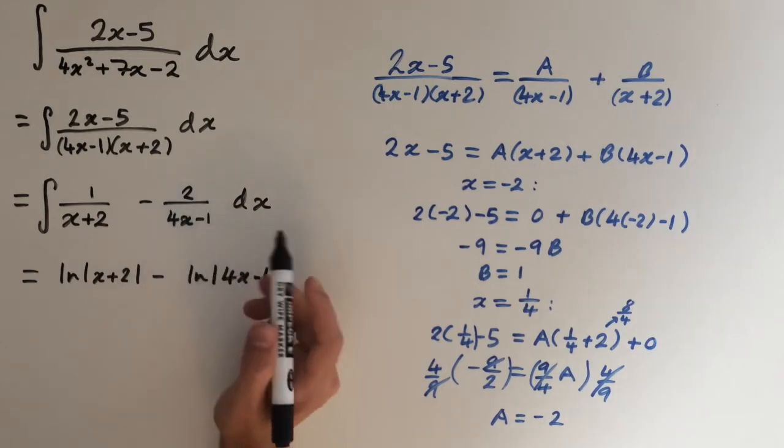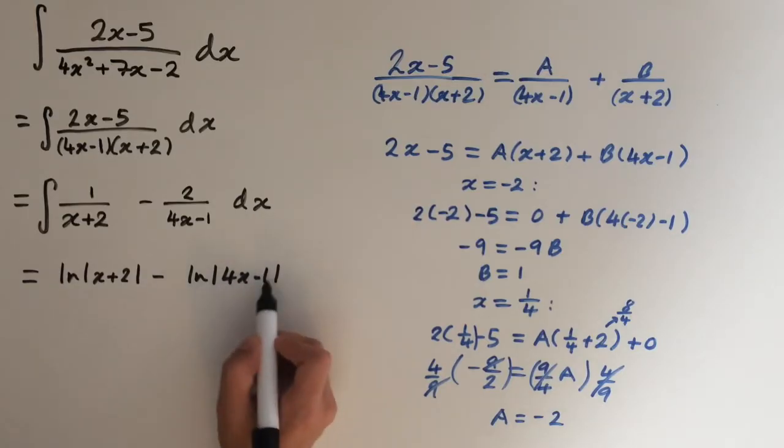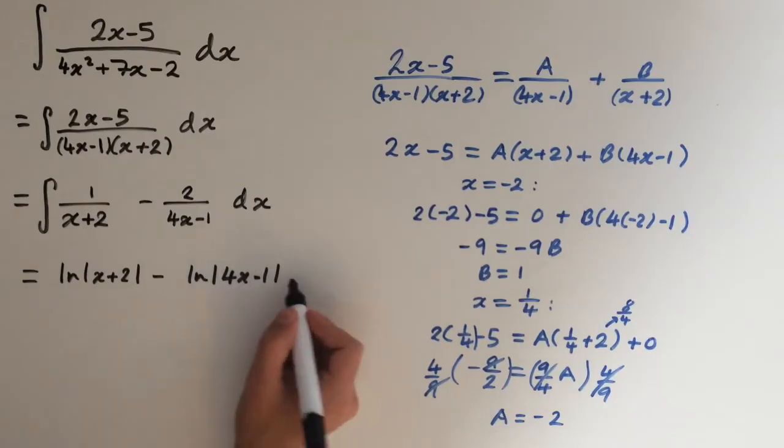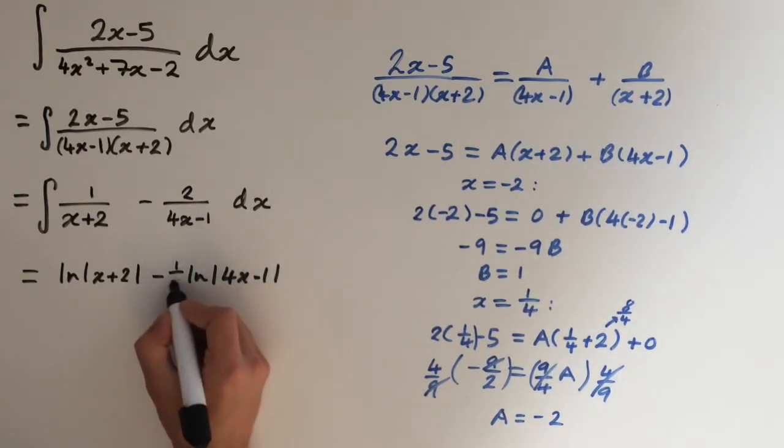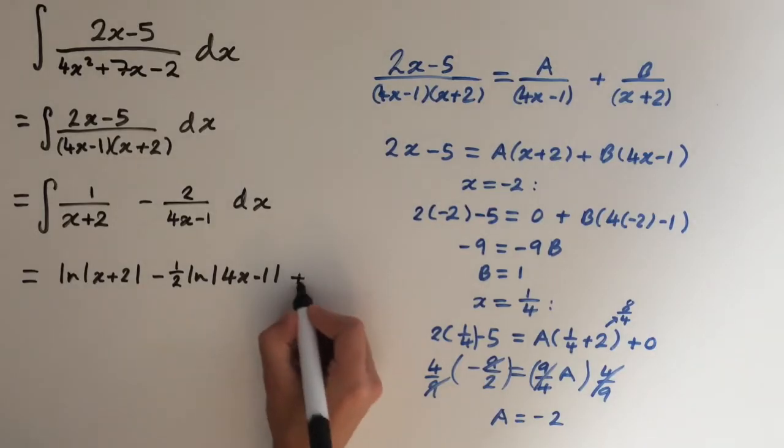But then we need to think about the constant in front. So we've got 2 here, and if we differentiate this, we'll get 1 over 4x minus 1 times 4, because the derivative of this inside is 4. And we've got 2 here, so we want to multiply this by a half, because 4 times a half will give us 2. And then we just need to add plus c.